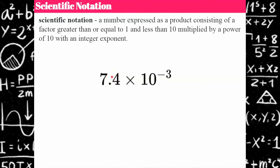The greatest you could have is nine point something. As soon as you get to 10, it's not in scientific notation. Another way of thinking about this: you can have one significant digit to the left of the decimal point, and zero is not significant. So you can have a digit of one through nine to the left of the decimal. You cannot have zero there, and you can't have 10 — as soon as you get into double digits, it's no longer scientific notation. It still represents a value; it's just not written in scientific notation.